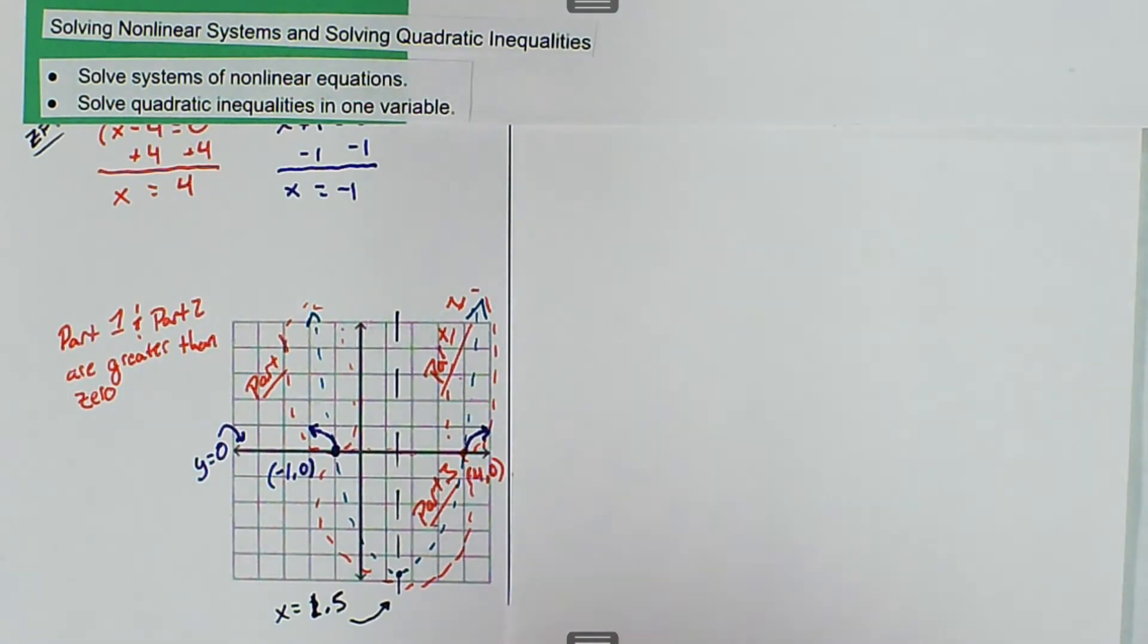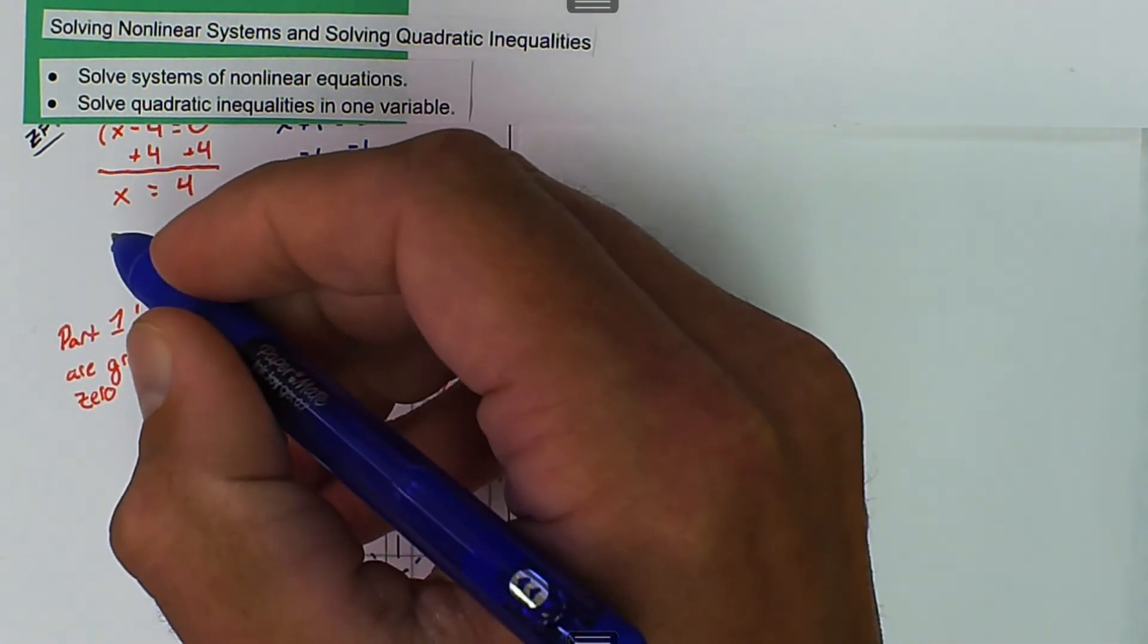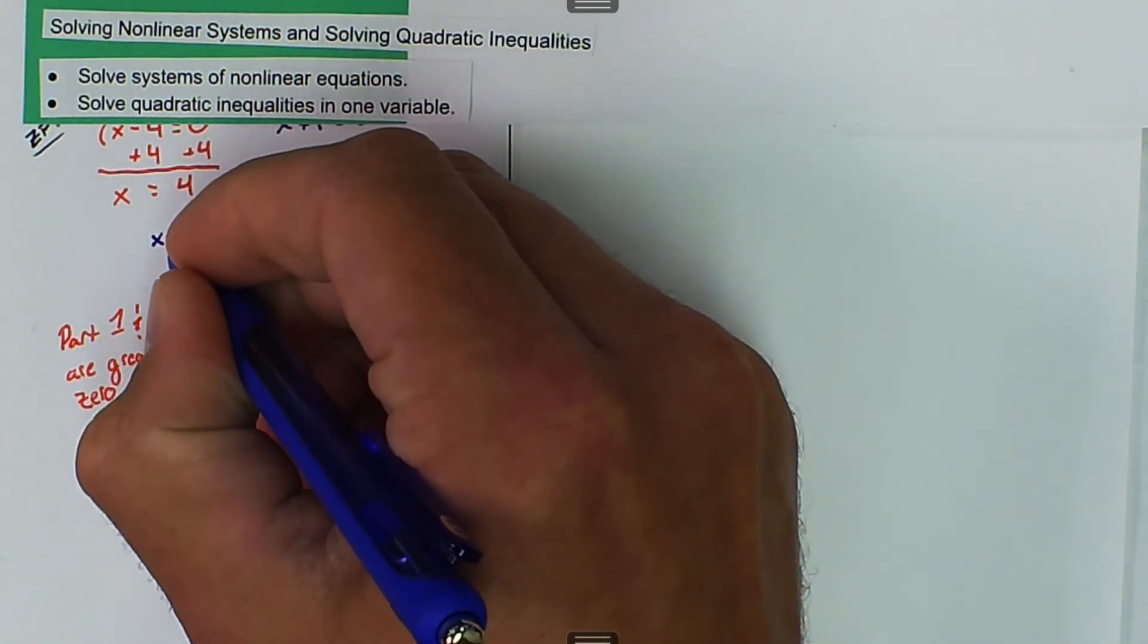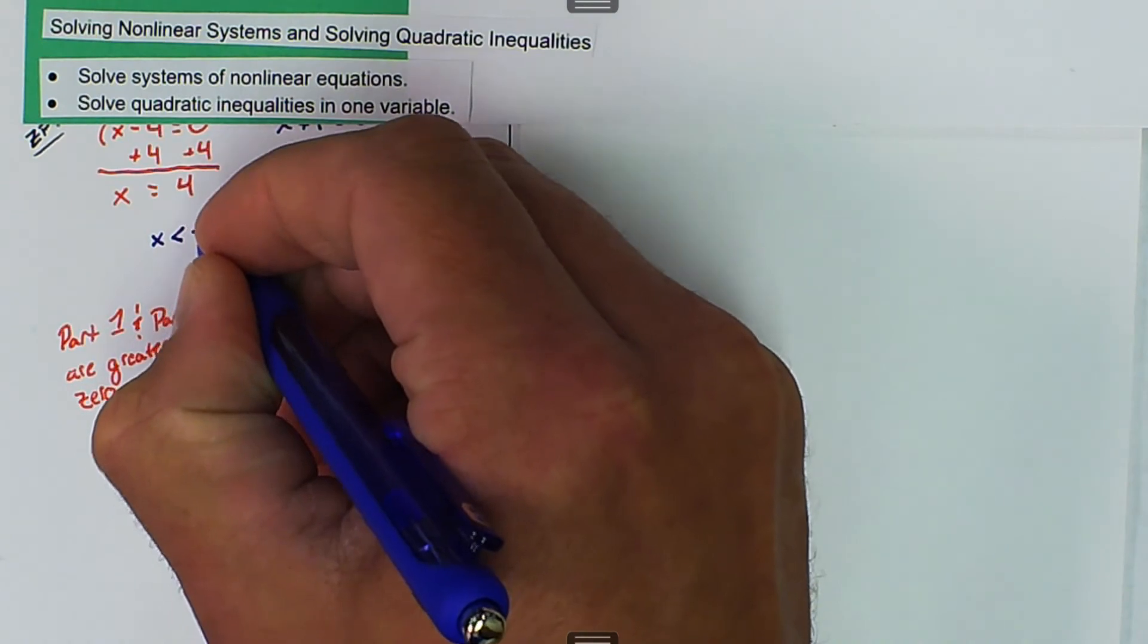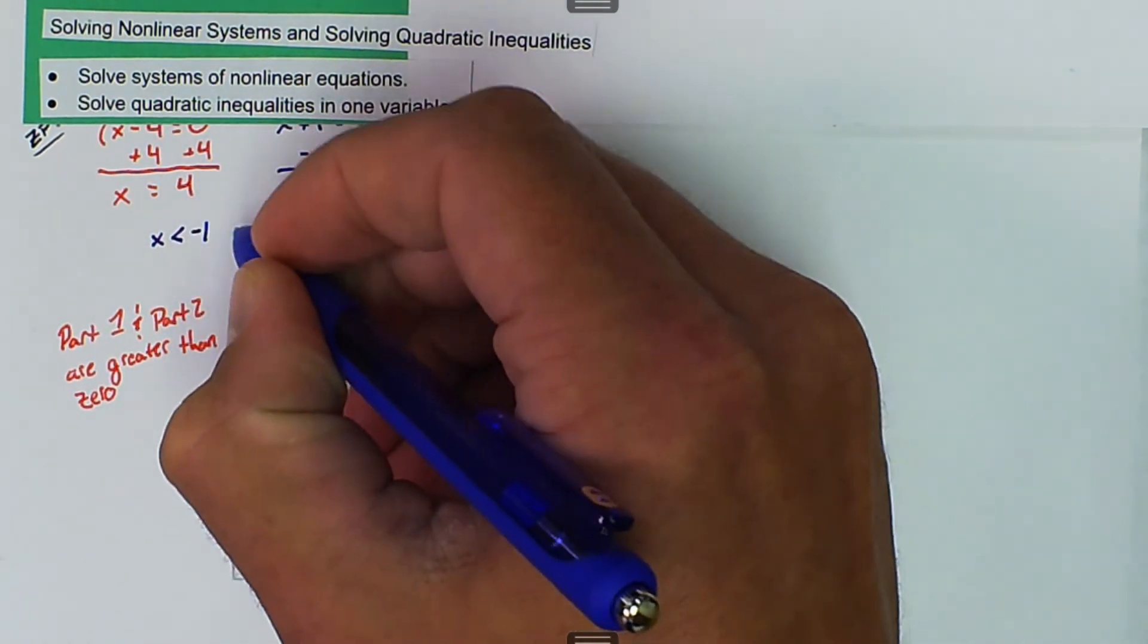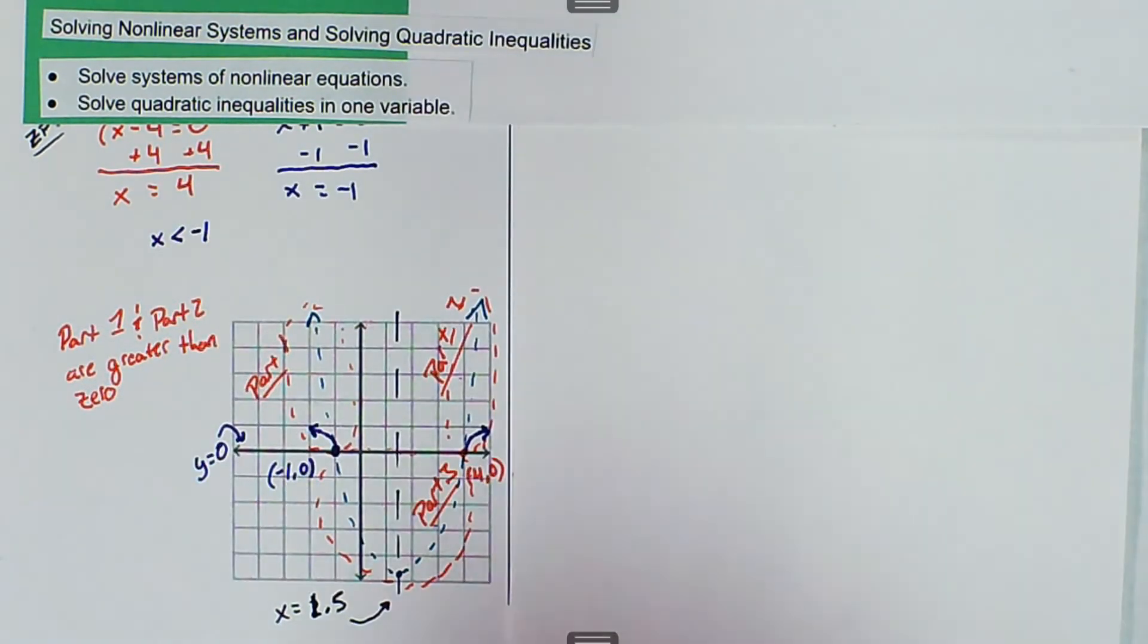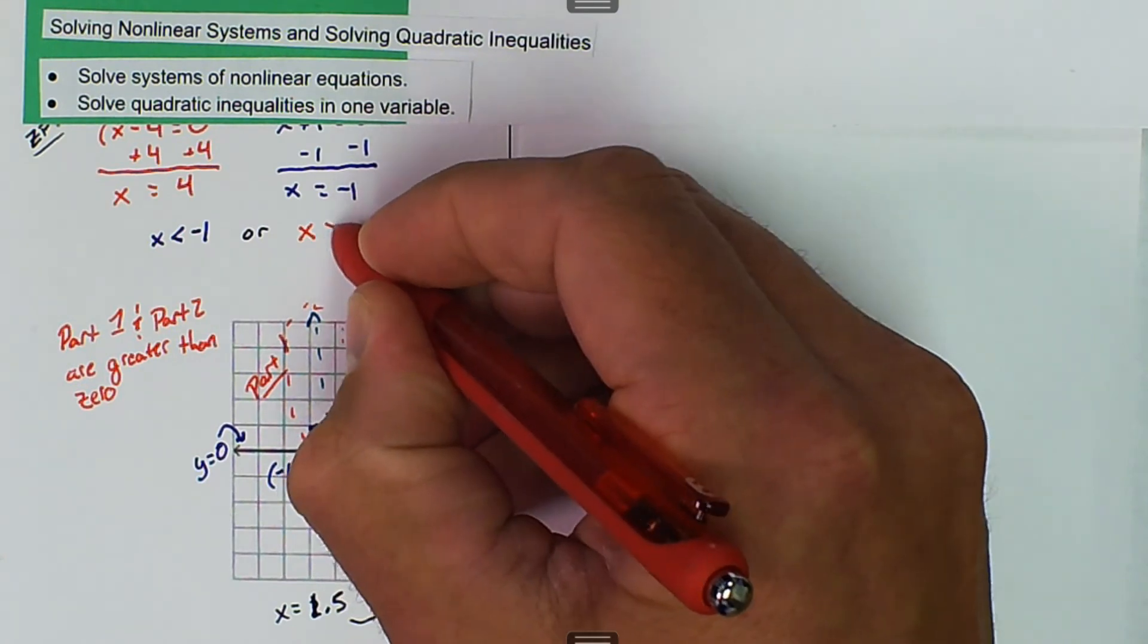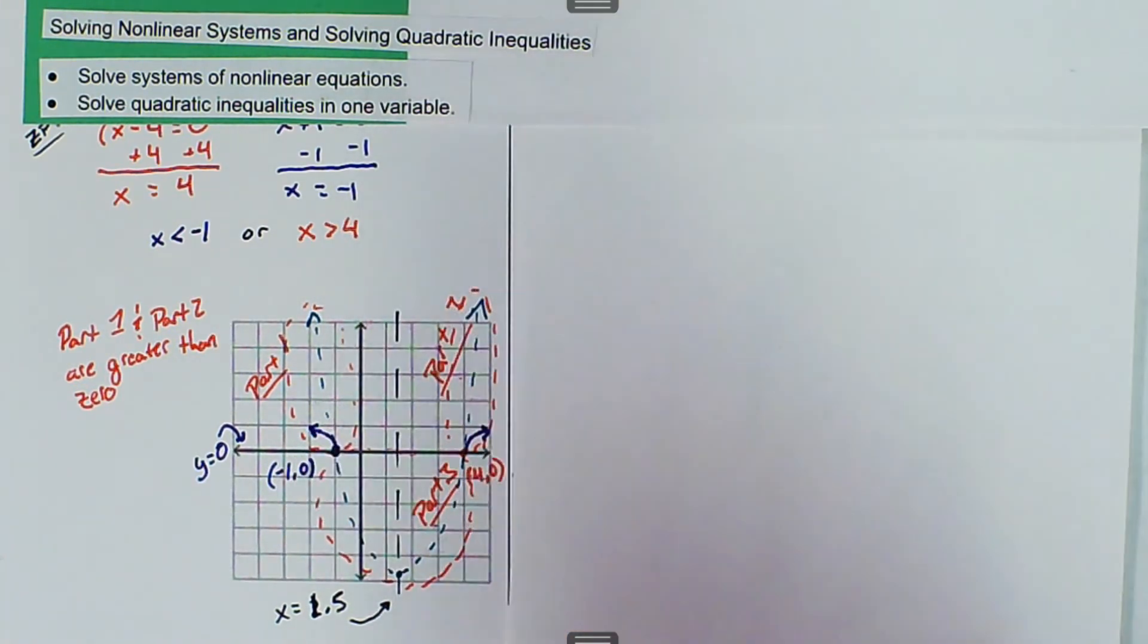So the only parts that we're going to count are x is less than negative one or x is greater than four. So those are the two that we can include.